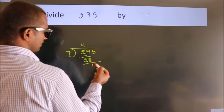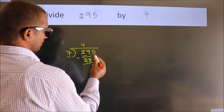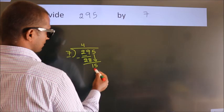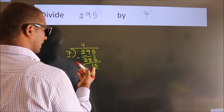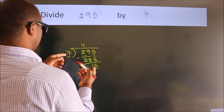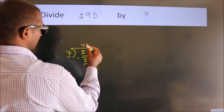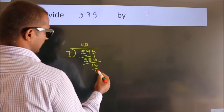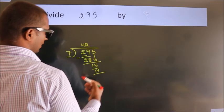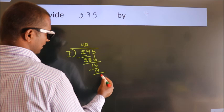After this, bring down the beside number. So 5 down. So 15. A number close to 15 in 7 table is 7 twos, 14. Now we subtract. We get 1.